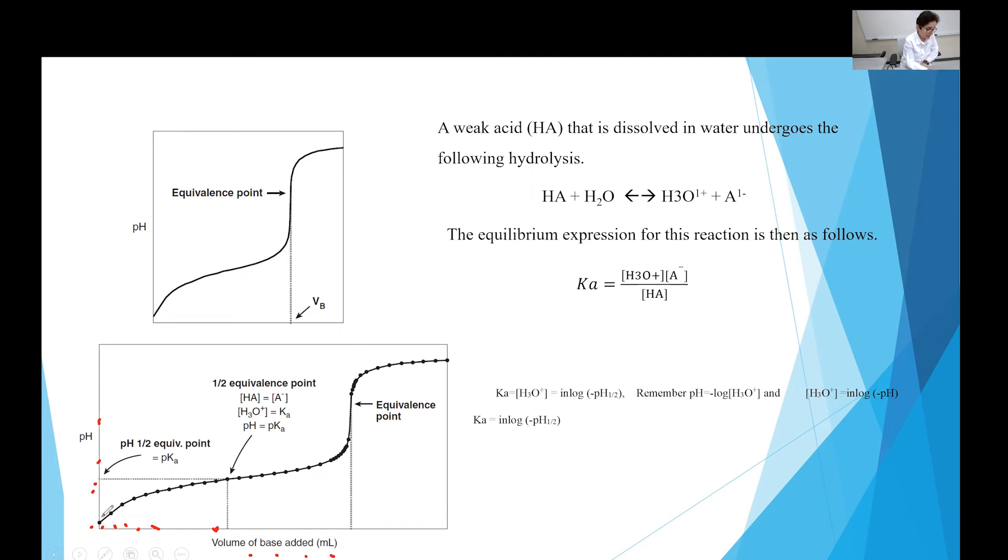Since we add base, the pH is going to slowly increase and there would be like a big jump. And when you have that big jump, you would see the equivalence point and you can find the volume at the equivalence point. When you have the volume at the equivalence point, that volume is volume needed for the saturation. Let's say hypothetically, this is 20.